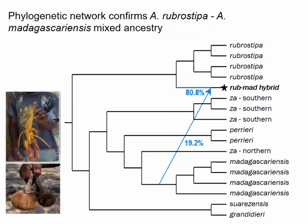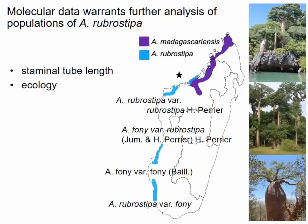Using statistical phylogenetic network approaches, we confirmed that the putative new species sample is of mixed ancestry: approximately 80% of its genome derives from rubrosstippa, with the other 20% from madagascariensis. Historical taxonomic records of rubrosstippa show interesting changes over the years, with molecular data confirming what traditional taxonomists already suspected — differences between northern and southern populations in ecology, staminal tube length, and leaf form.